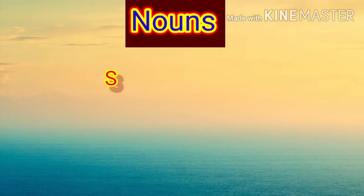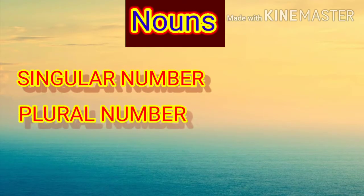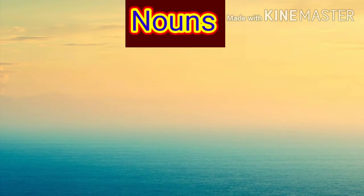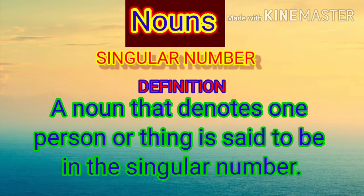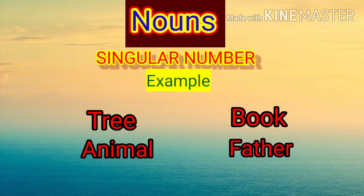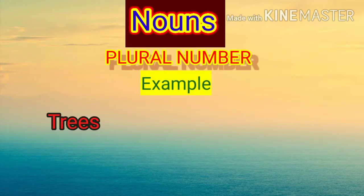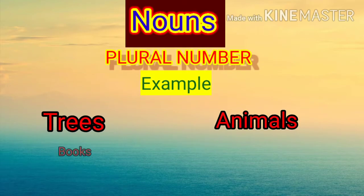In this video we will discuss about singular number and plural number. Singular number: any noun that stands for only one person or thing is said to be in the singular number. For example: tree, book, animal, father. Plural number: a noun that denotes more than one person or thing is said to be in the plural number. For example: trees, animals, books, mothers.